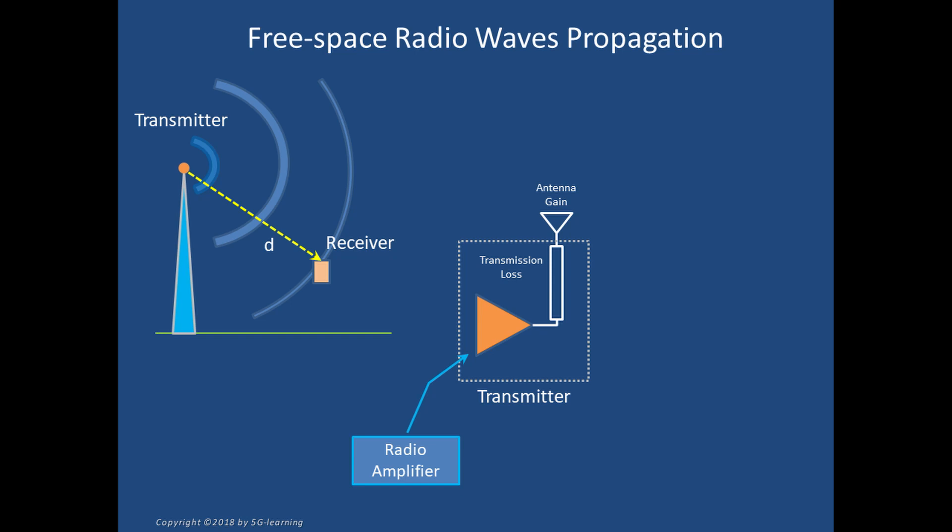The signal produced by the radio amplifier at the transmitter is attenuated by the transmission cables, connectors, and other accessories feeding the antenna, which provides additional gain. The radio waves flow from transmitter to receiver.